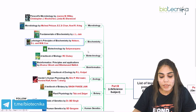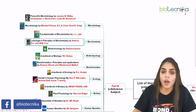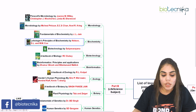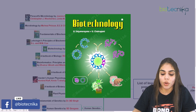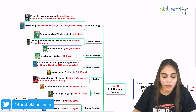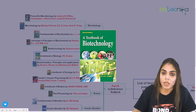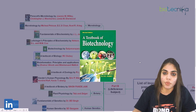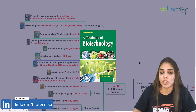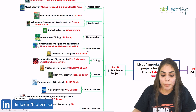The third section is biotechnology, where you need to prepare all the principles and applications. You can either go for Biotechnology by Satya Narayan or a Textbook of Biotechnology by RC Dubey. You can go for any of these books mentioned for biotechnology.